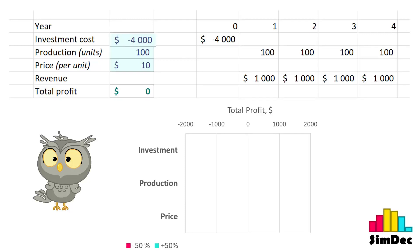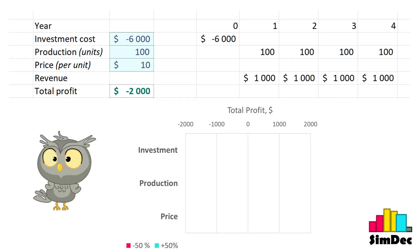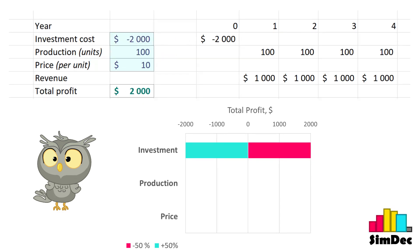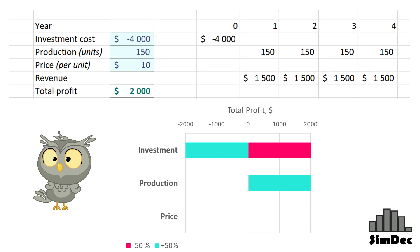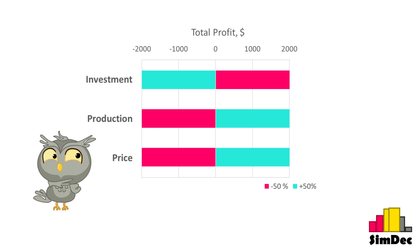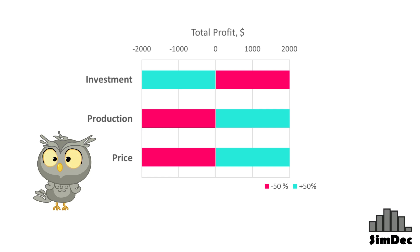If the investment cost is $2,000 larger, the total profit becomes $2,000 lower. If the investment cost is smaller, the total profit is the same amount higher. Then we return the investment cost back to the base case and check the production. If it is 50 units higher, the total profit is higher as well, and so on till we check all the factors one by one. As the result, for this particular case, the Tornado diagram shows us that all these factors affect the outcome equally strongly.